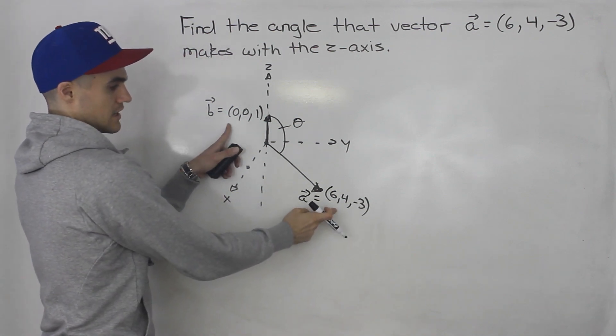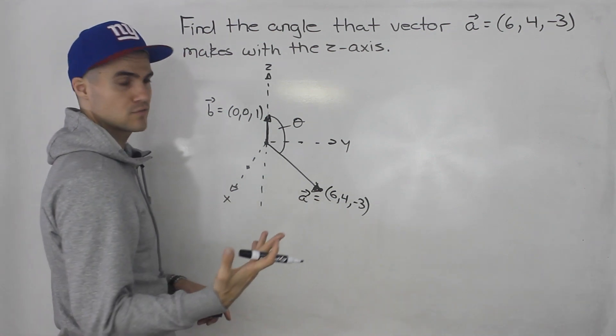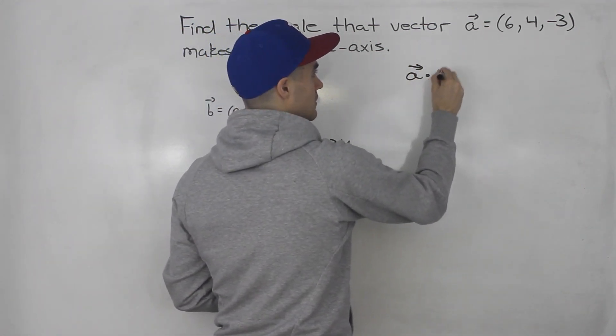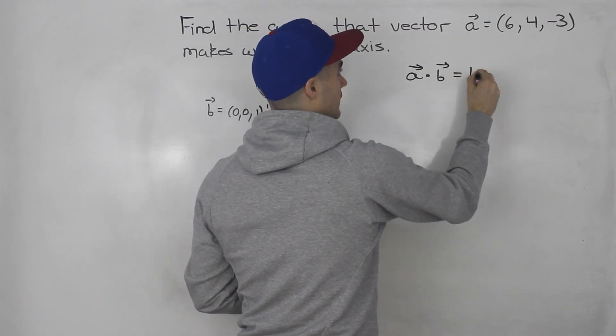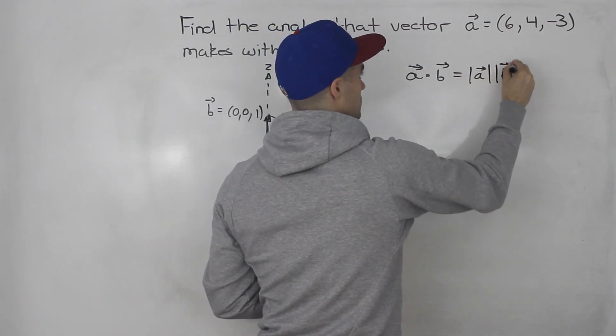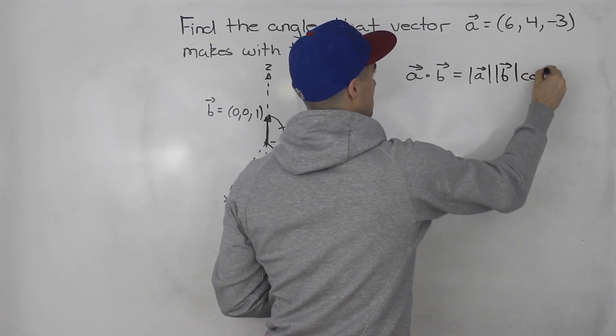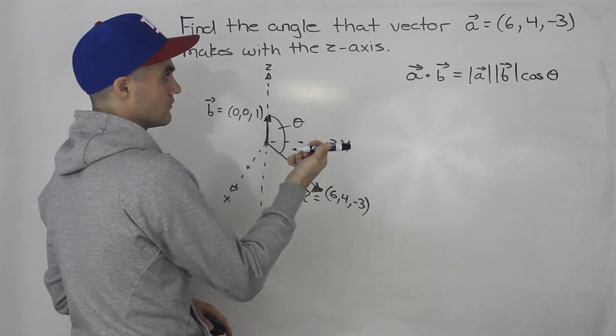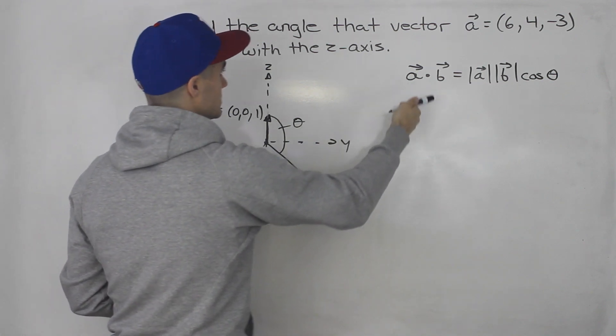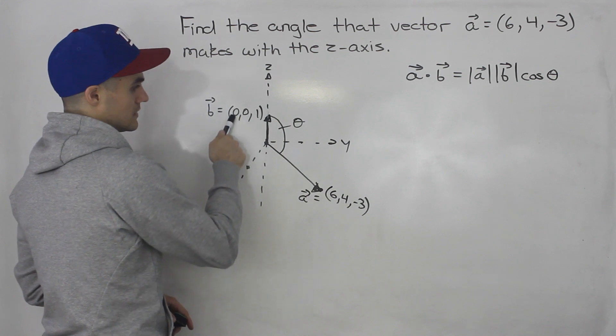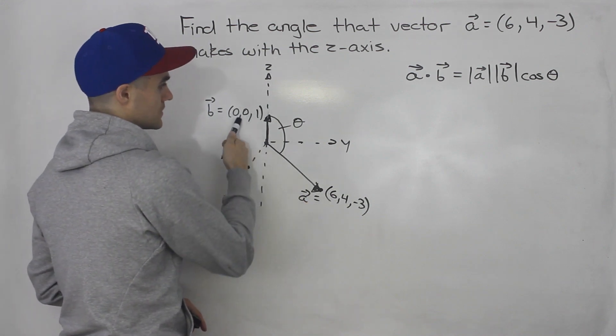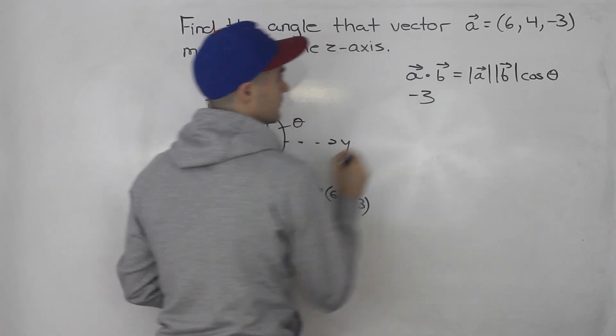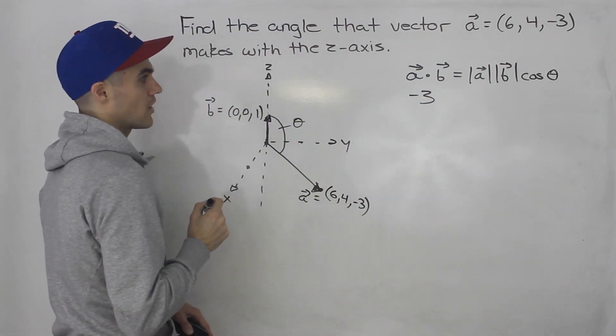So we got two vectors in component form. How do we find the angle in between them? Well we use the dot product formula. So a dot b equals magnitude of a times the magnitude of b times cos theta. And notice we can figure out what all of these are. So a dot b is going to be what? 0 times 6 is 0. 0 times 4 is 0. 1 times negative 3 is negative 3. So that's the dot product between them.